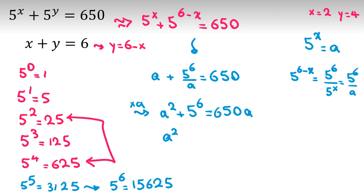a^2, let's take these to the left-hand side, minus 650a plus 15625 equals 0. This number is 5^6.